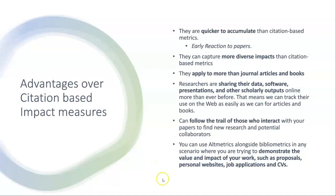Advantages over citation-based impact measures: they're quicker to accumulate, giving you an early reaction to your papers. They can capture more diverse impacts and apply to more than just journal articles and books. Researchers are sharing data, software, presentations, and other scholarly outputs online more than ever, so we can track their use on the web as easily as for articles and books. You can also follow the trail of those who interact with your papers to find new research and potential collaborators.